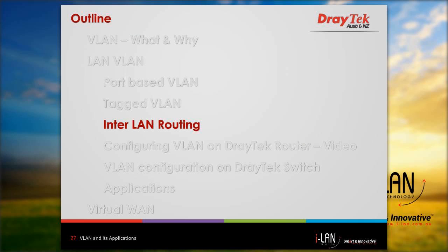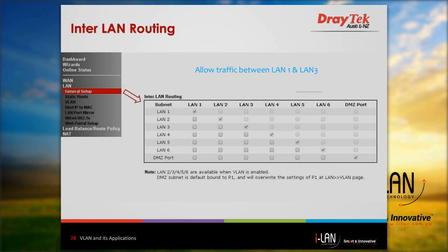I will now go through interLAN routing. This feature is useful if you want to allow communication between any two LAN subnets. For example, we have one LAN subnet for accounts as VLAN 1 and another LAN subnet for payroll as VLAN 3, and we want to allow communication between these two departments. For that, go to LAN General Setup, interLAN routing table. Look at the intersection of LAN 1 and LAN 3 and tick the checkbox. Similarly, you can allow communication among different subnets as per the requirement.